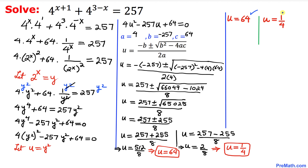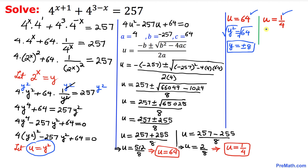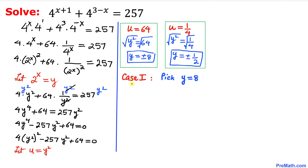Since u = y², we back-substitute. For u = 64: y² = 64, so y = ±8. For u = 1/4: y² = 1/4, so y = ±1/2. Those are our four values of y.